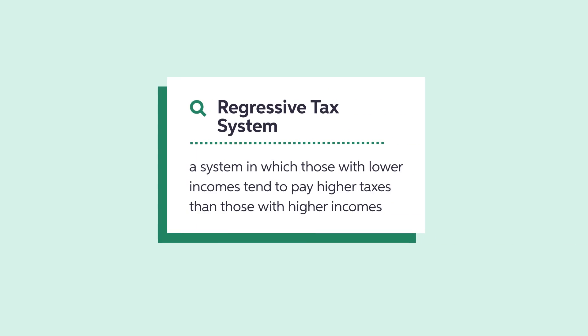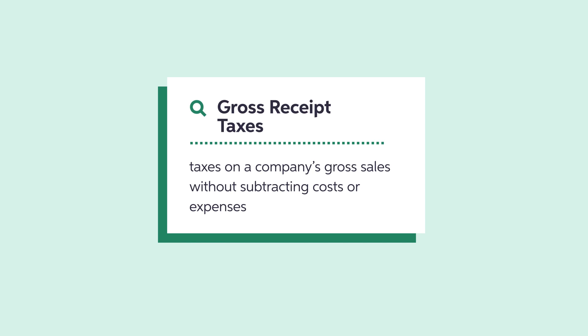There are many debates over the tax system. For one, while the tax system is overall progressive, some aspects are regressive. Regressive taxes are the ones that tend to hit those with lower incomes harder than those with higher incomes. For instance, gross receipts taxes are taxes that are applied to a company's gross sales. This means the tax is applied to all of the money a company earns without subtracting their costs or expenses. Because these taxes don't take into account expenses, it tends to hit startup or struggling businesses, which are usually run by middle class individuals, harder. This is just one example of when taxes negatively affect lower or middle income individuals more than wealthier ones.